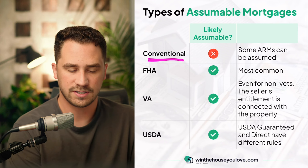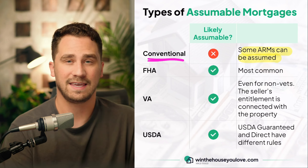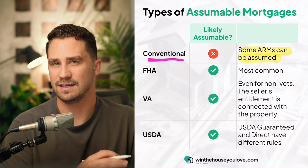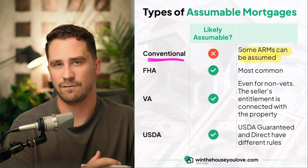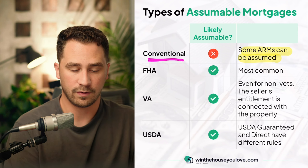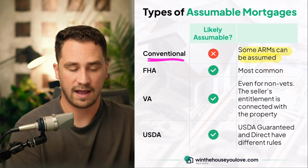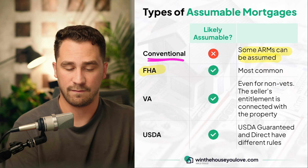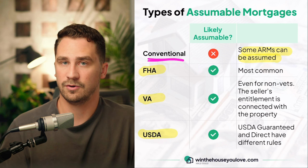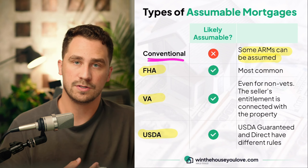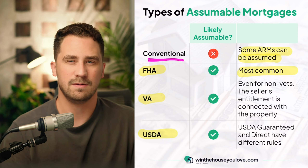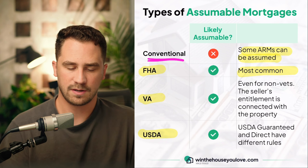However, if the seller has any government loan — an FHA loan, a VA loan, or a USDA loan — those are usually assumable. FHA is going to be the most common type of loan assumption.